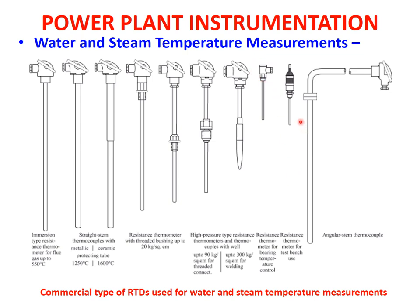A resistance thermometer for bearing temperature control is also shown, along with a resistance temperature thermometer for test bench use. An angular stem thermocouple is used where there is no horizontal space — for instance when pipings are installed very close to walls. In summary, this lecture introduced water and steam pressure and temperature measurements, specifying which instruments are to be used for which procedure or operation.